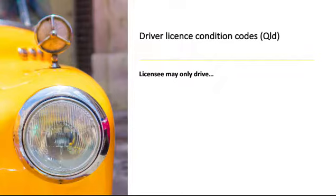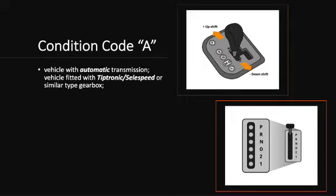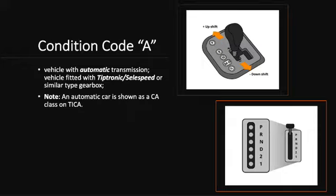The licensee may only drive on condition code A: vehicle with automatic transmission, or vehicle fitted with Tiptronic, Selfy speed, or similar type gearbox. Note: an automatic car is shown as CA as a class.